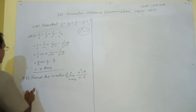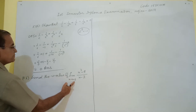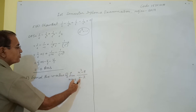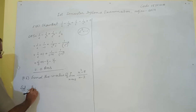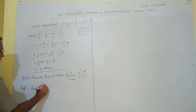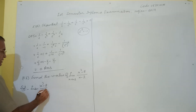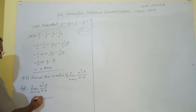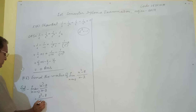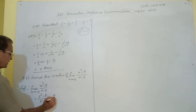Next: find the value of limit as x approaches 2 of (x³ - 8)/(x - 2). First, directly put the value: 2³ - 8 over 2 - 2, which gives 0/0. Therefore it is indeterminate form.